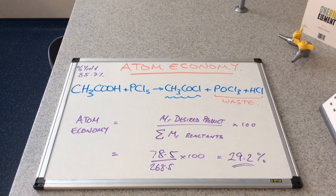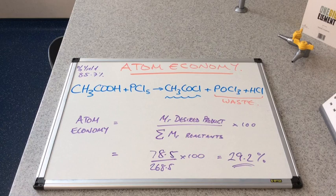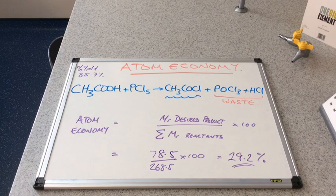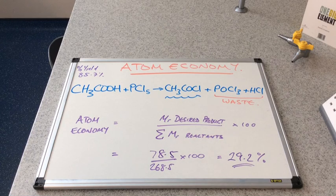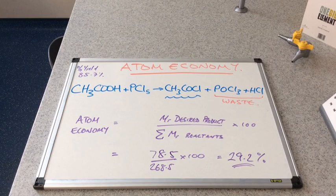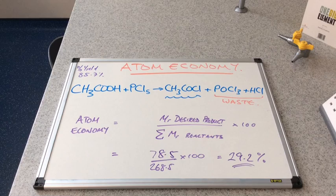And obviously you're reducing your waste management costs if you're the owner of the company, and so your profits are going to improve as well. So chemists are constantly researching alternative ways to make these products. It might be that a catalyst is possible for this reaction, or the catalyst allows an alternative route with different reactants even, still making the same product of course, but the alternative route might have a much better atom economy.